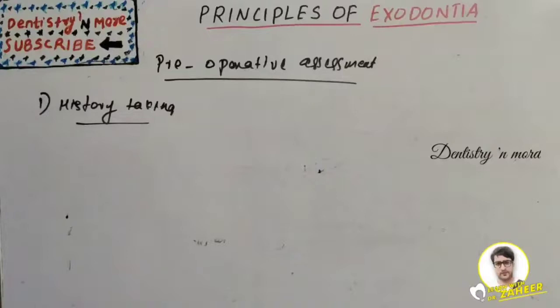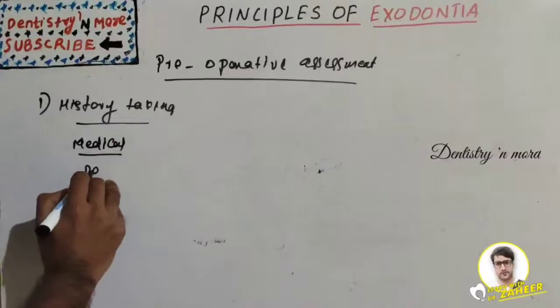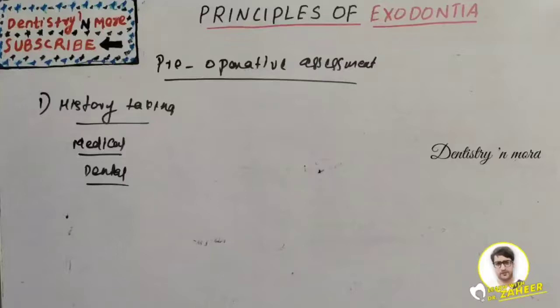We need to ask about hypertension, jaundice, kidney diseases, rheumatic problems, cardiac diseases, asthma, and bleeding disorders. Regarding dental history, we need to ask about previous extractions, any complications, or any uncontrolled bleeding which occurred during a previous extraction procedure.